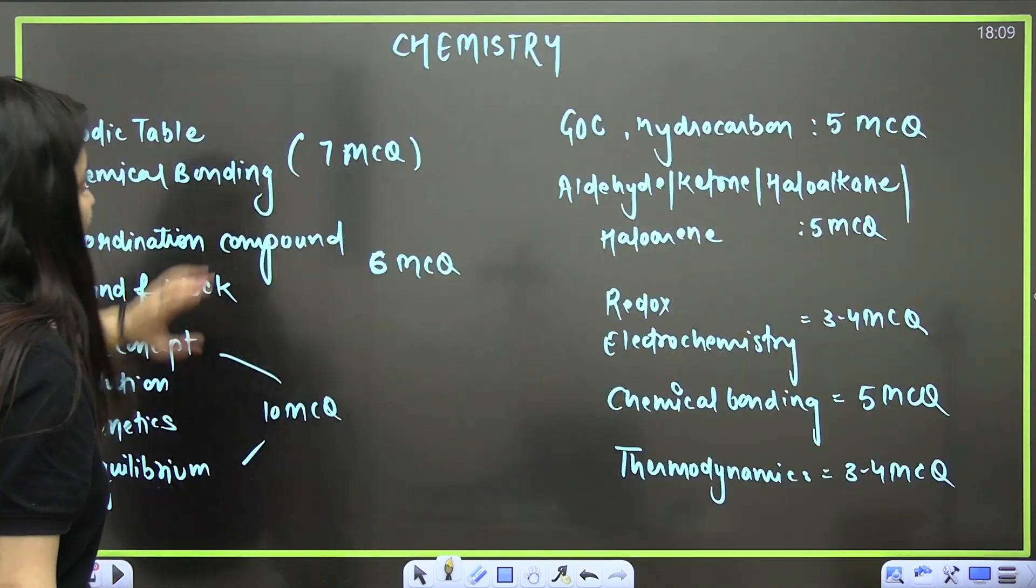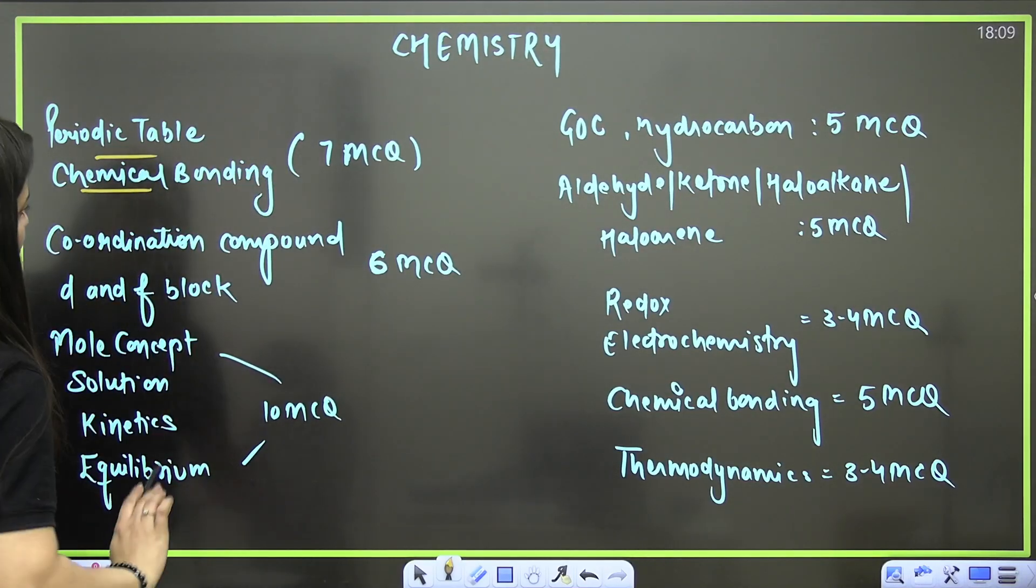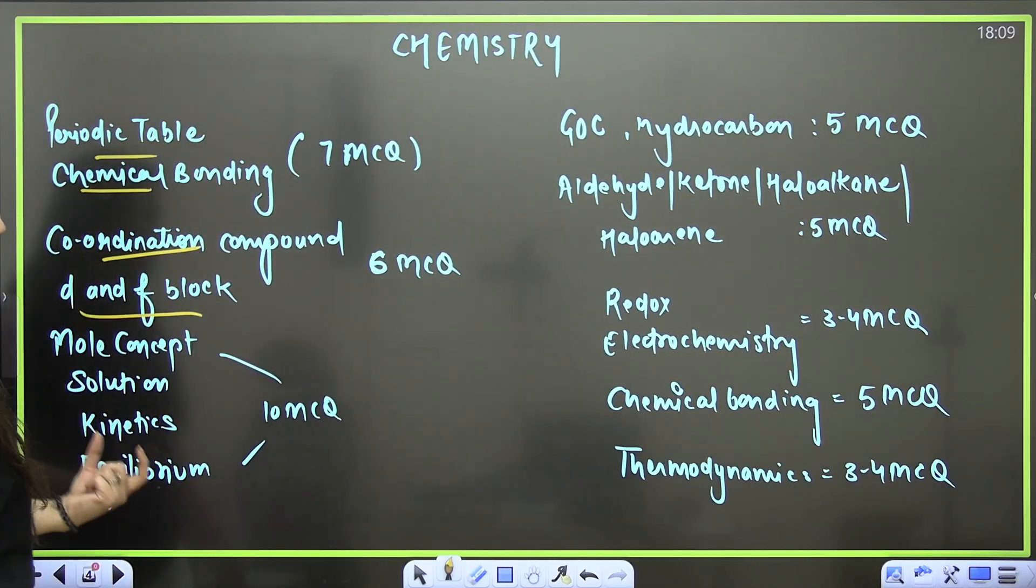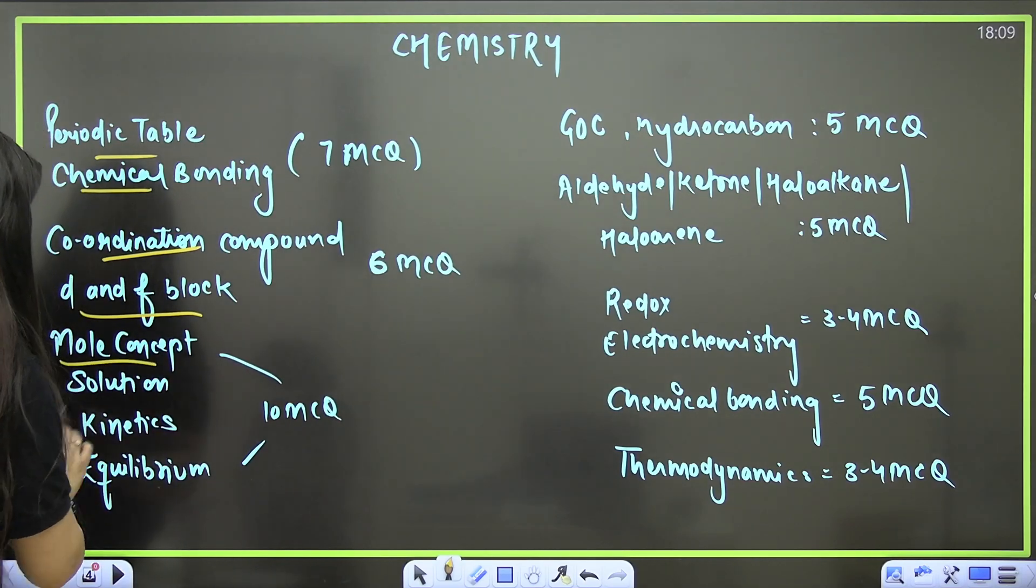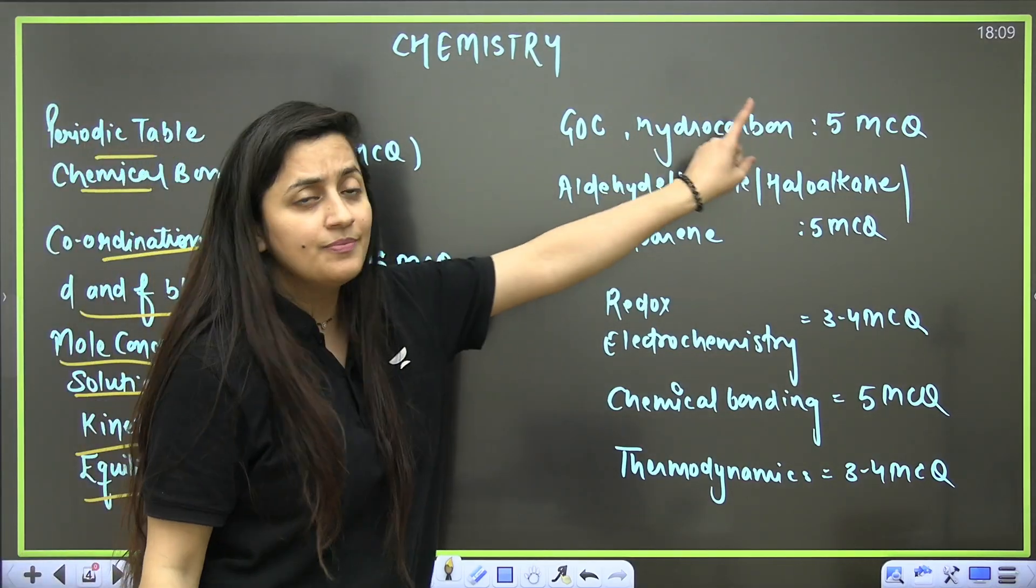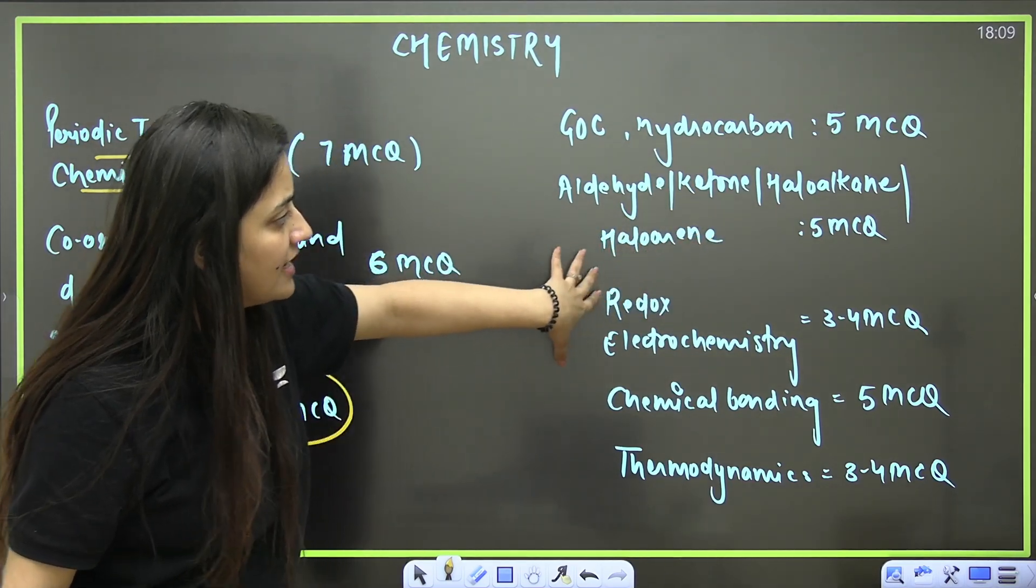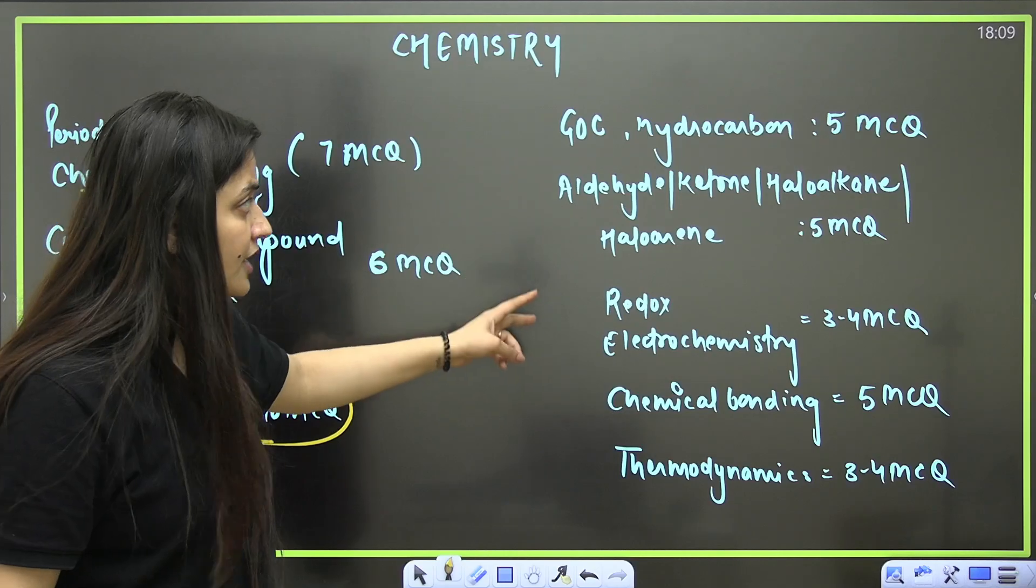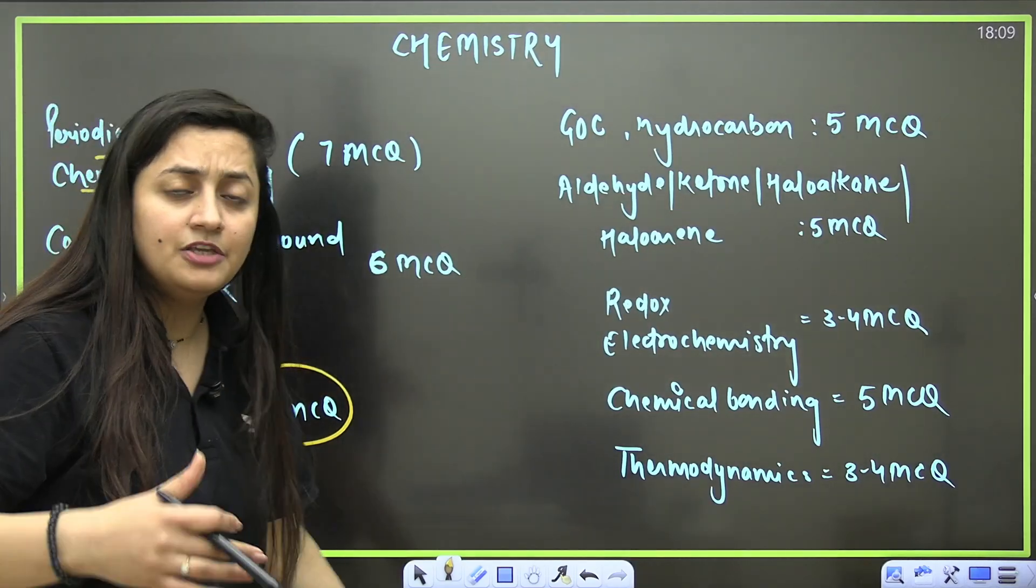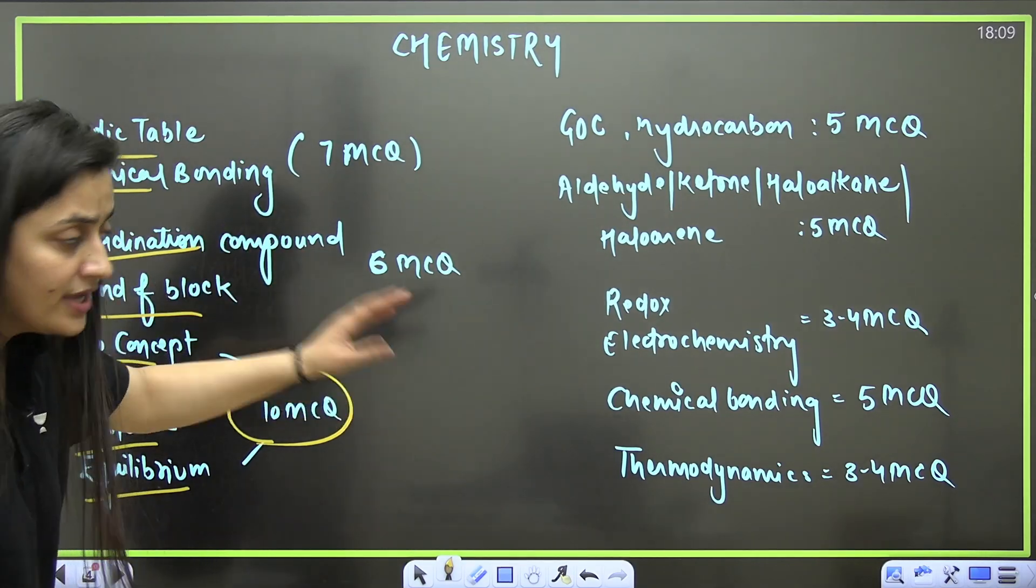Next is chemistry. Periodic table and chemical bonding can give you 7 MCQs. Coordination compounds, d and f block—6 MCQs. Mole concept, solution, kinetics, equilibrium—approximately 10 MCQs. GOC plus hydrocarbon—5 MCQs. Aldehyde ketones, haloalkanes, haloarenes—5 MCQs can come. You can even go for the p block, but that is lengthy, so I've mentioned d and f block here.